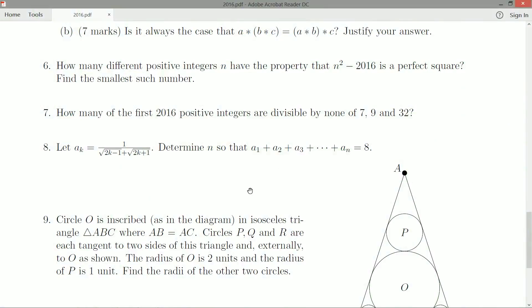Very simple, no parts to this one. Let a sub k be equal to 1 over square root 2k minus 1 plus square root 2k plus 1. Determine n so that a1 plus a2 plus a3 all the way up to plus an is equal to 8.